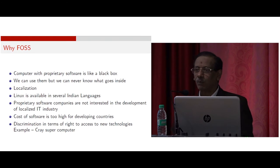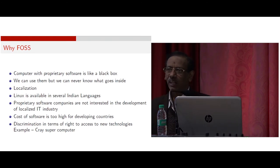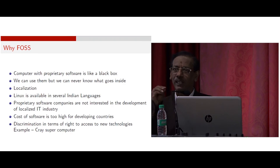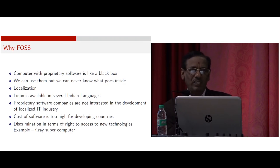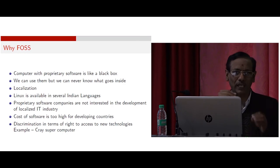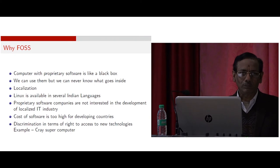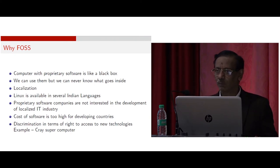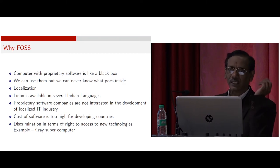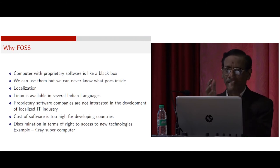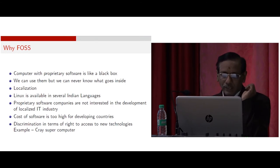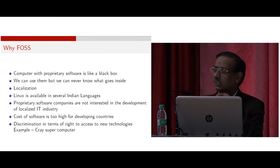Computers with proprietary software are like a black box — you have a computer and a program, you do your work, but why it is happening you cannot see. All these software come in binary format; you cannot open it and see what is happening inside. Another problem is localization: computers generally use the English language, but in India and other countries there are many people who don't know English. Proprietary software companies are also not interested in developing the localized IT industry.